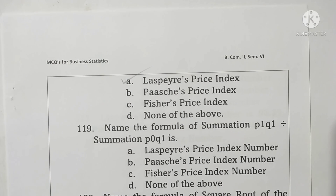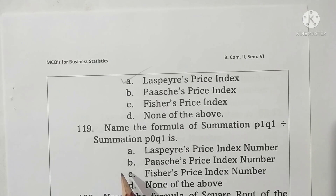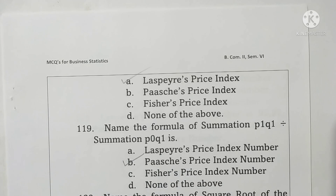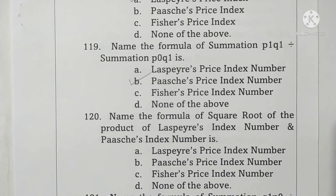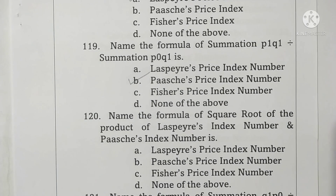Question 119: name the formula — summation P1Q1 divided by summation P0Q1. This is the formula of Paasche's price index number. Option B is correct.